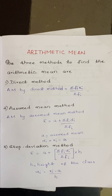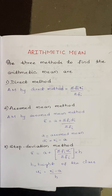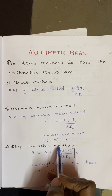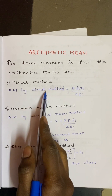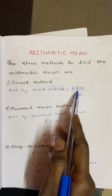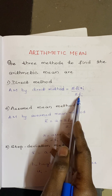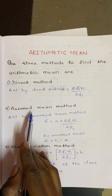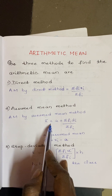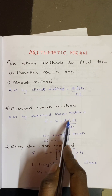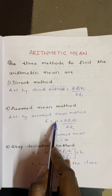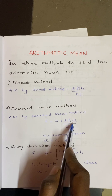There are three methods to find the arithmetic mean: the direct method, the assumed mean method, and the step deviation method. In the direct method we use the formula: mean = Σfi·xi / Σfi. The second is the assumed mean method: x̄ = a + (Σfi·di / Σfi), where a is the assumed mean and di = xi − a.